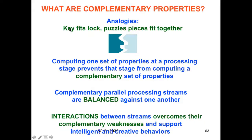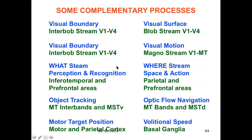Computing one set of properties at a processing stage prevents that stage from computing complementary sets of properties. The complementary and parallel processing streams are balanced against one another such that interactions between the streams overcome their complementary weaknesses. I say this with confidence because we now know about quite a few pairs of complementary processes. These are just a few of them.